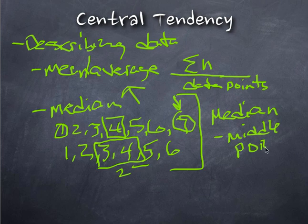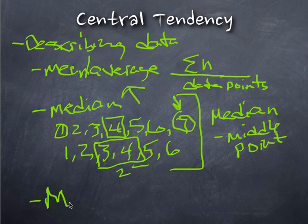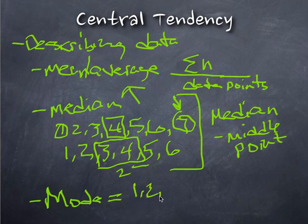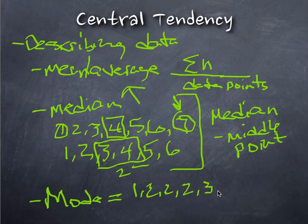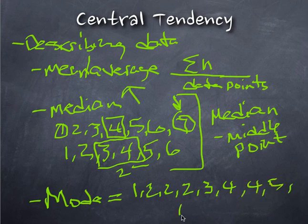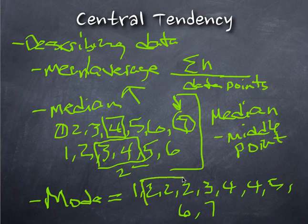The last one of central tendency is just what we refer to as the mode. And the mode simply is the most occurring number of items. So if I have a 1, 2, 2, 2, these are my data points, 3, 4, 4, 5, 6, and 7, what would be my mode? Well, the mode would be 2 because that's the highest number of reoccurring data points.